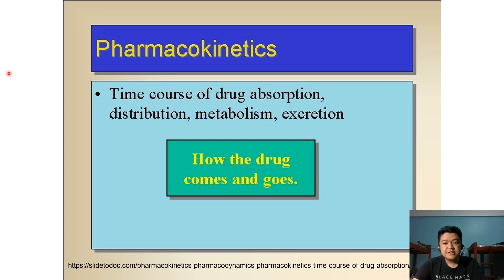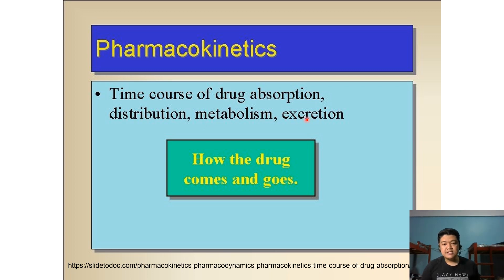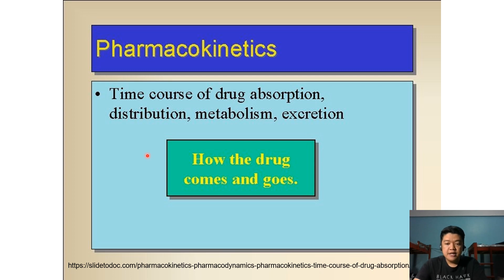From a previous discussion, we discussed pharmacokinetics and defined it as the time course of drug absorption, distribution, metabolism, and excretion — abbreviated as ADME. Pharmacokinetics answers the question of how the drug comes and goes out of the body, as well as what the body does to the drug.